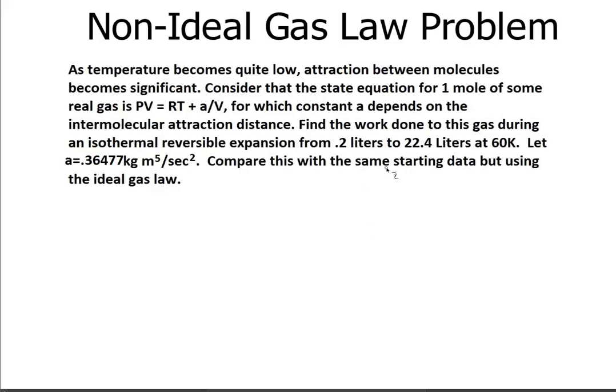So we're going to consider that the state equation for one mole of a real gas is PV equals RT plus A over V, where P is pressure, V is volume, R is the gas constant, and T is the Kelvin temperature. Now we're going to have this constant A, which depends on the intermolecular attraction distance, and we're given the constant A as 0.364 kilograms meters to the fifth per second squared.